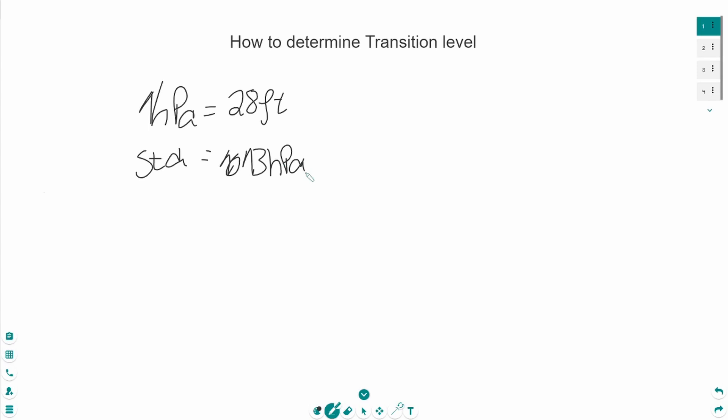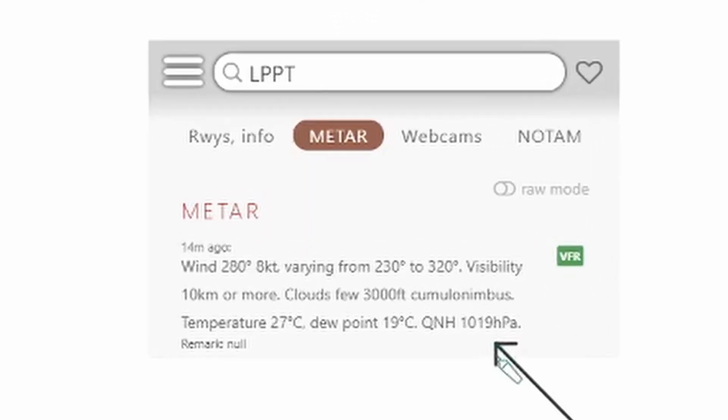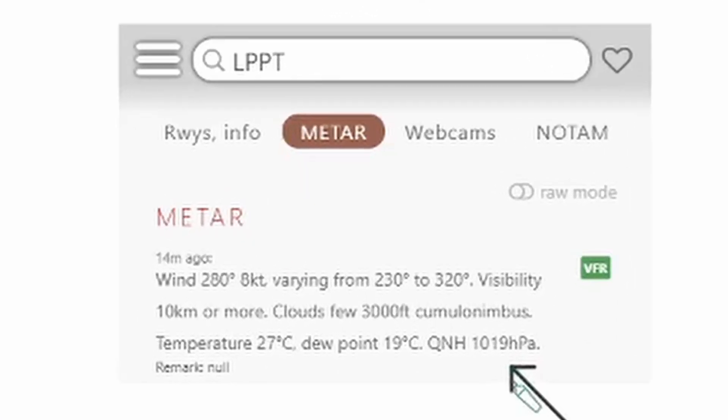The next step is to find out the local QNH. The local QNH can be found in METARs and ATISs. For the people who don't know how to get this information, there is a very nice website called Windy where you just type in the ICAO code of the airport and get the wind information. And right here is the local QNH in Lisbon. The local QNH is 1019 hectopascal.